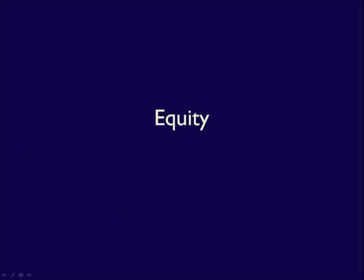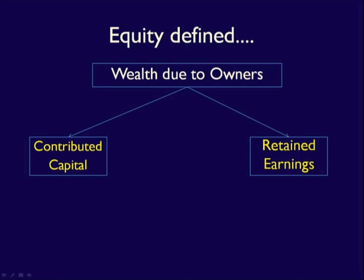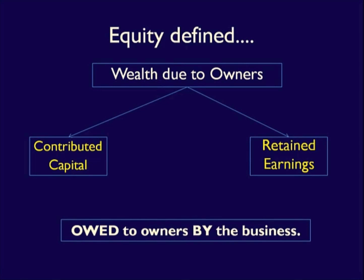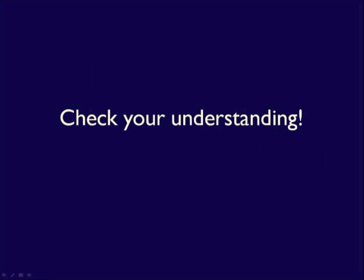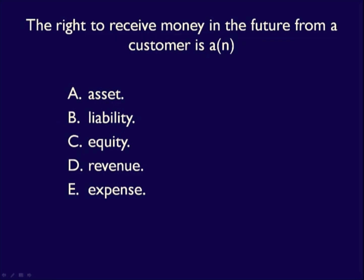We've already defined equity when completing the Statement of Retained Earnings. As a reminder, equity is the financing by owners, made up of contributed capital and retained earnings. It answers the question: what part of the business is financed by the owners? Similar to liabilities, the amount of equity is owed to the owners by the business. Check your understanding: the right to receive money in the future from a customer is an asset called accounts receivable. It has future benefit, will be converted into cash, is legally owned, and is recorded due to a past transaction.